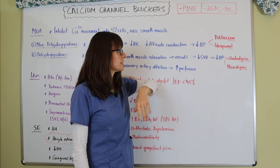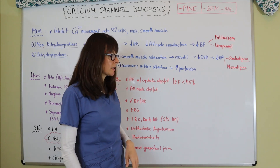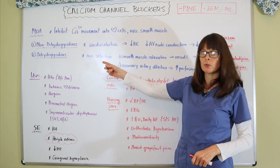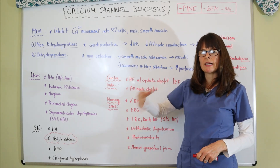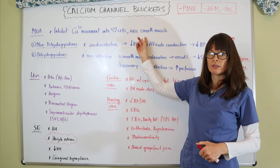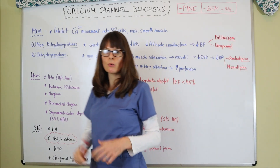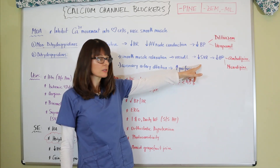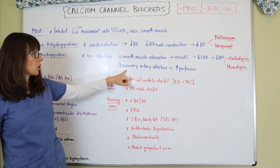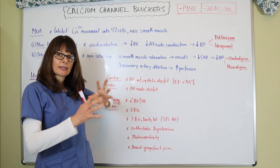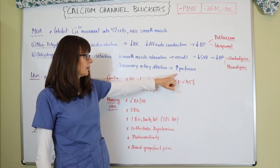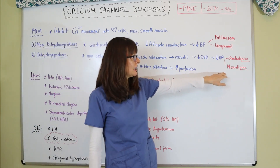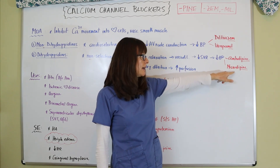The dihydropyridines are the non-selective ones, meaning they block calcium channels in both cardiac and vascular smooth muscle cells. Smooth muscle relaxation leads to vasodilation, which decreases systemic vascular resistance and lowers blood pressure. They also cause coronary artery dilation, increasing perfusion. These non-selective calcium channel blockers end in -PINE — the most commonly used ones are amlodipine and nicardipine.